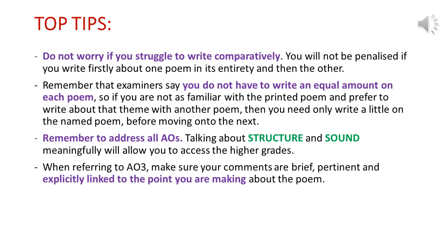To sum up the exam advice: don't worry if you can't write comparatively — you are allowed to write all about one poem and then all about the second poem, making just a brief link with a connective between the two. Remember also that you don't have to write an equal amount on each poem — if you feel more confident with one, say a bit more about that. Do remember to try and address all the assessment objectives, particularly assessment objective two — the analysis of poetic methods. With assessment objective three, remember it's not weighted as heavily as the other objectives, so if you are making points about context, make sure they are explicitly linked to what you're saying about the poem and the quotations, and keep the comments brief.